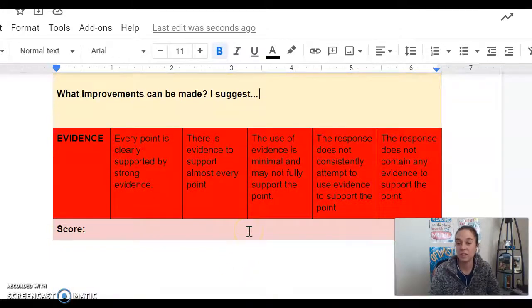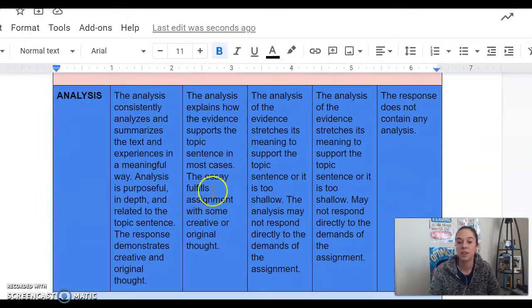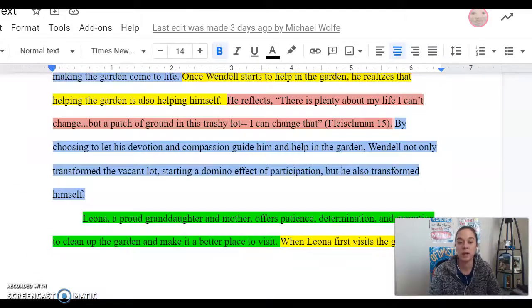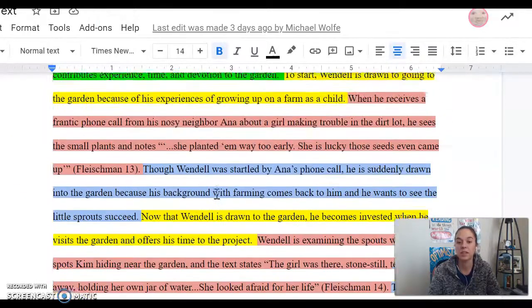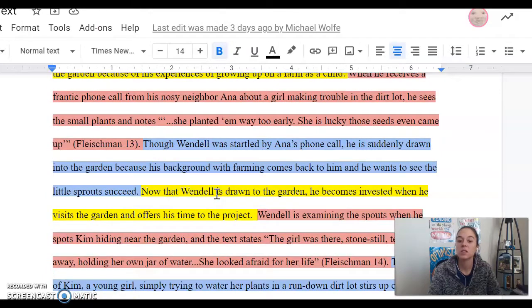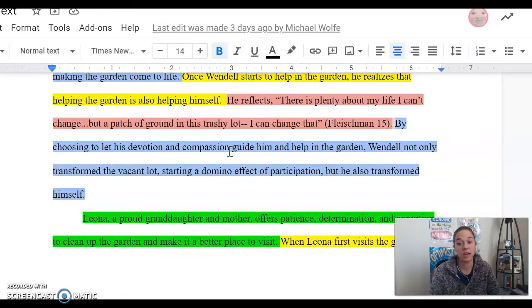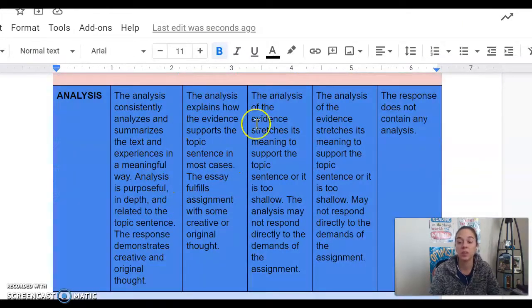And I would do the same for their evidence, each piece of evidence, and then their analysis. How did they do in this paragraph? Now, when you're thinking about this, there's three sets of PEA. So it could be a case of like, gosh, they nailed it, the first one. The last one was a disaster. It fell apart.